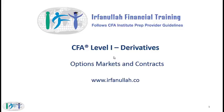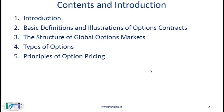In this lecture we will go over the CFA Level 1 reading on Options, Markets and Contracts. This is a long reading with lots of learning objectives. We will talk about basic definitions of call options and put options, illustrate different types of options contracts, and Section 3 on the structure of global options markets talks about exchanges and over-the-counter markets.